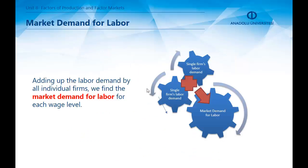We have seen the mechanics of a single firm's labour demand. At a given wage level, each firm has a certain level of demand for labour. When we explain the market demand for labour, we add up the labour demand of all individual firms to find the market demand for labour at each wage level. The market demand for labour is the collection of all single firms' labour demands.